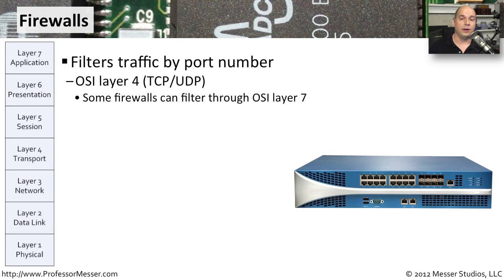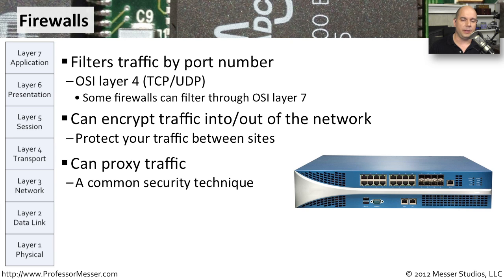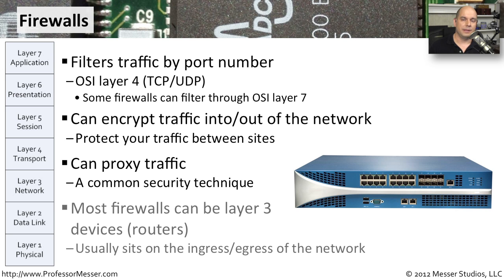If you're connecting to the internet, you've probably got a firewall between you and the rest of the world. Firewalls filter information based on port numbers, operating at OSI Layer 4. Newer firewalls can even examine the application being used and filter traffic based on that, operating at OSI Layer 7. Firewalls are commonly used between sites to encrypt data between connections. They can also proxy traffic — you make a request to the firewall, it makes the request to the destination, and the response is examined before being returned to you. Firewalls can also operate as a router at OSI Layer 3, performing IP routing between your internal network and the internet.